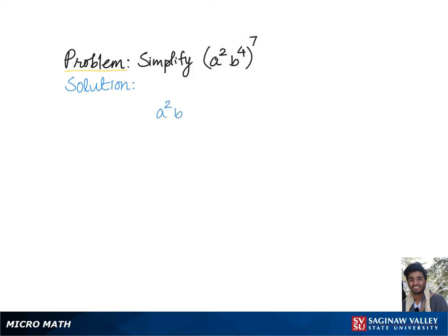To simplify (a²b⁴)⁷, let's go over the quotient rule which says to raise an exponent to another exponent, we need to keep the base and simply multiply the exponents.